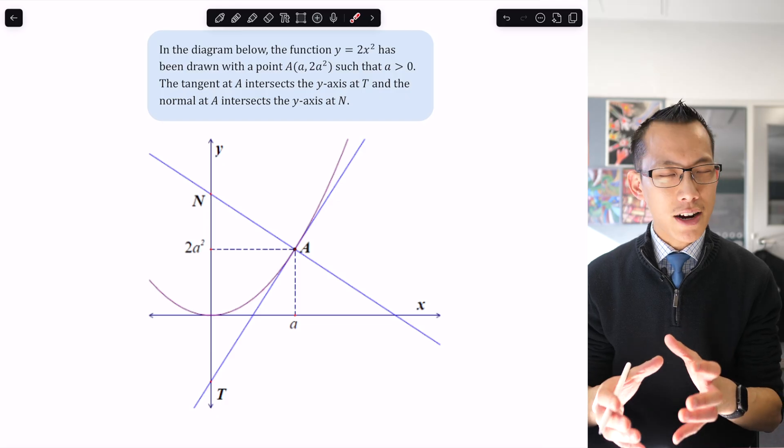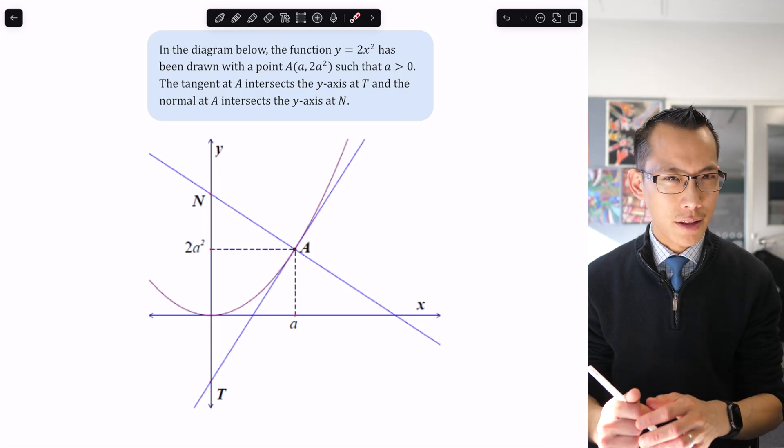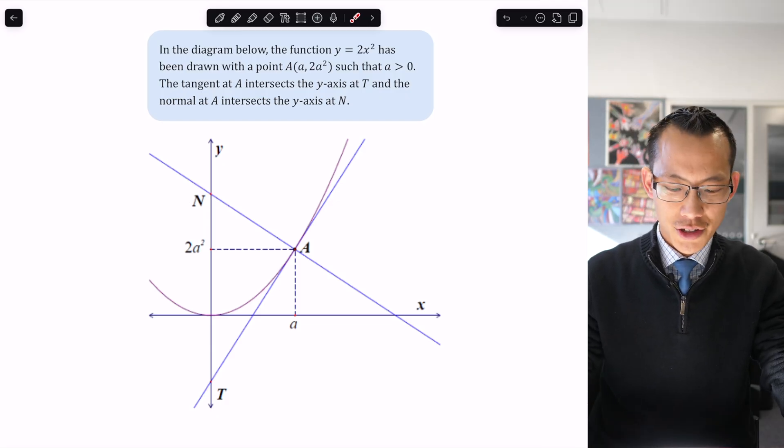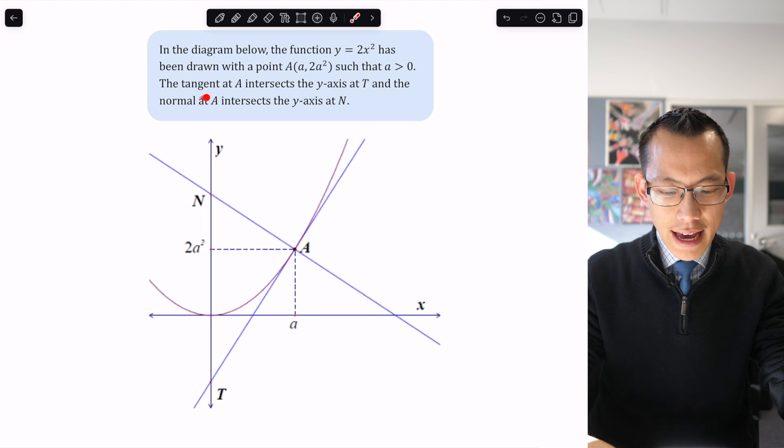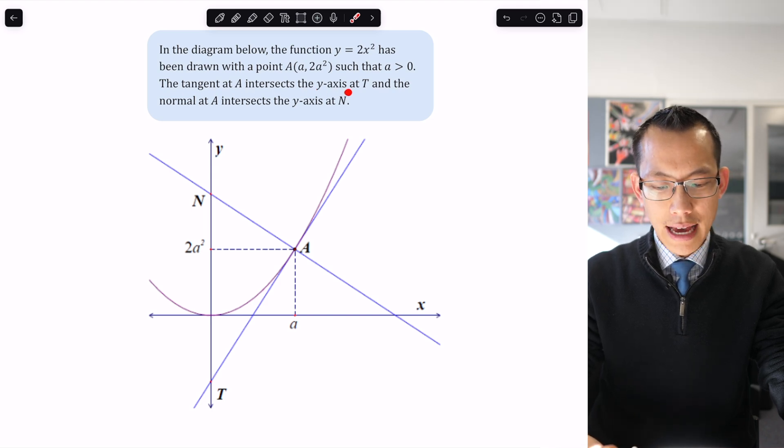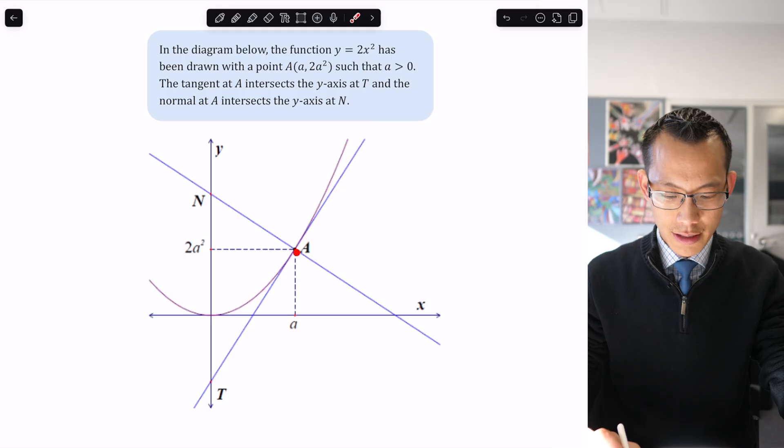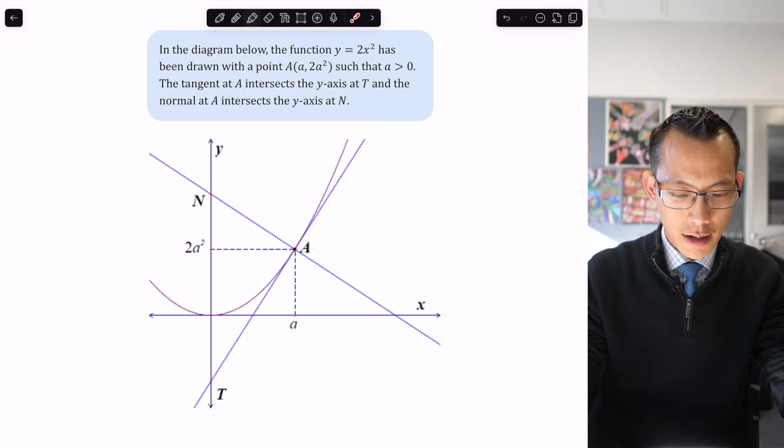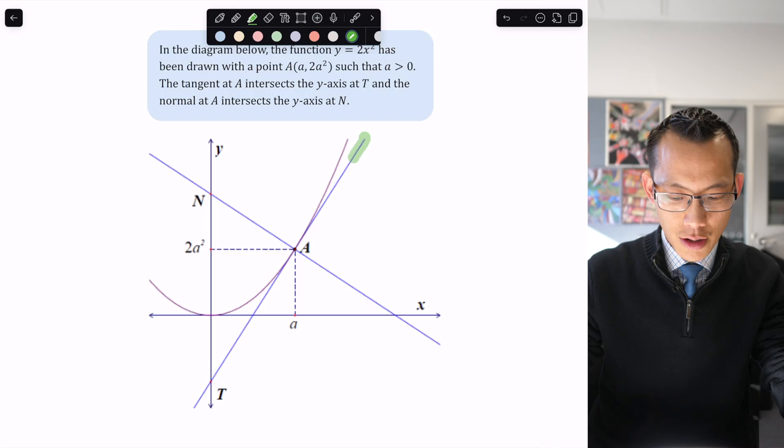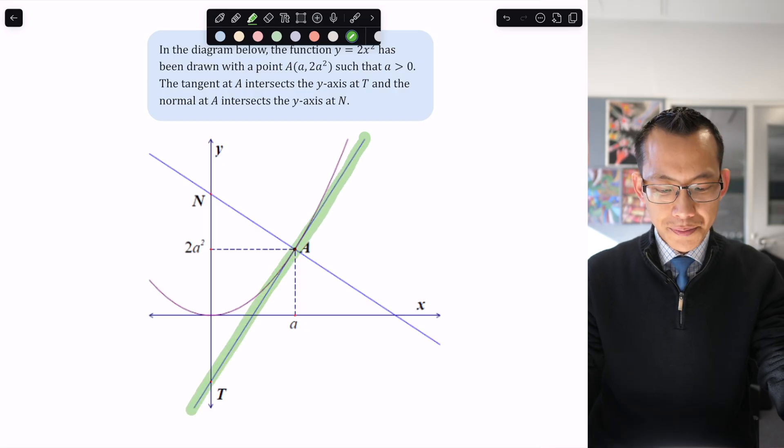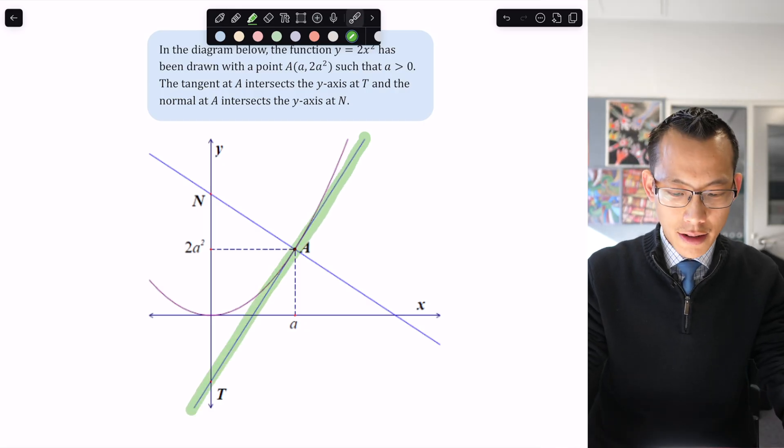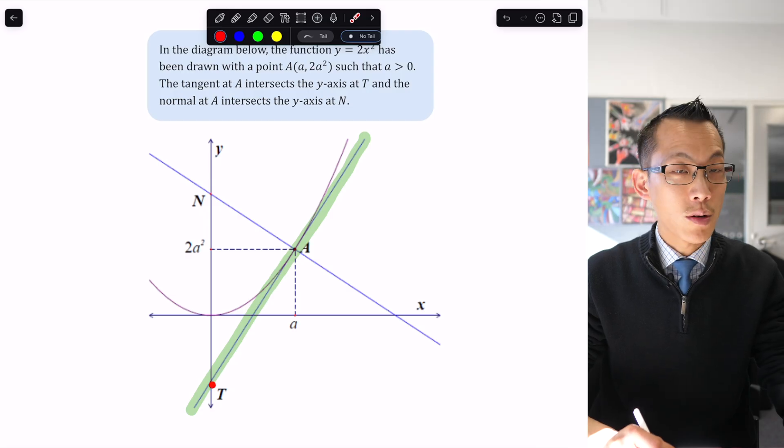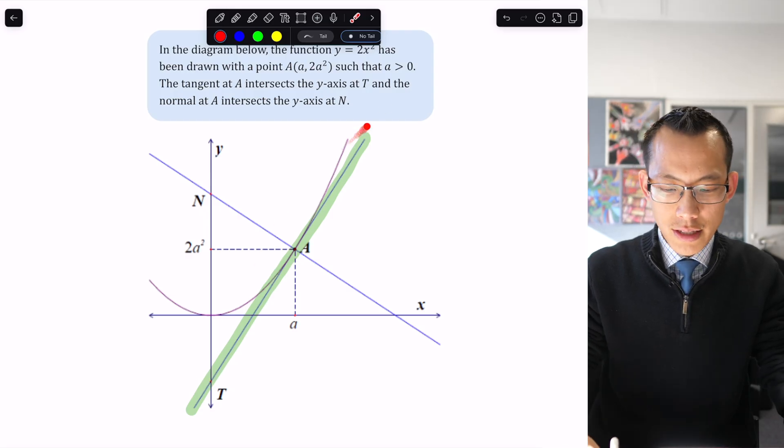The fact that it's variable means we have to be more careful. The tangent at A intersects the y-axis at T. I've got this tangent here marked in green, and it intersects with the y-axis at T.